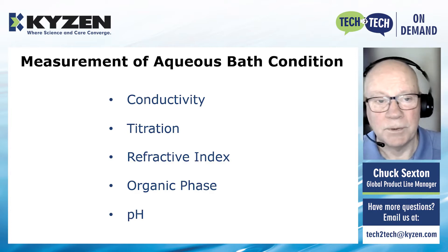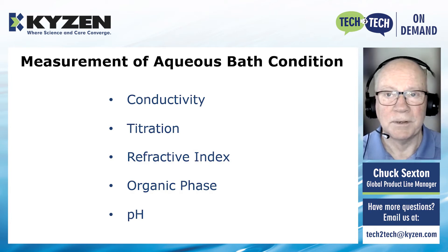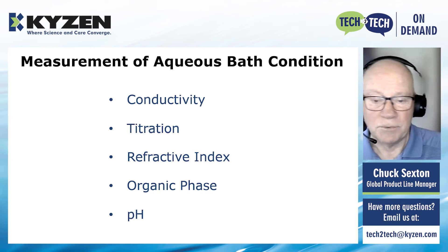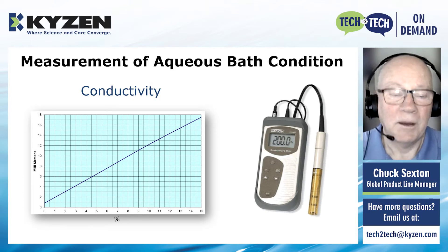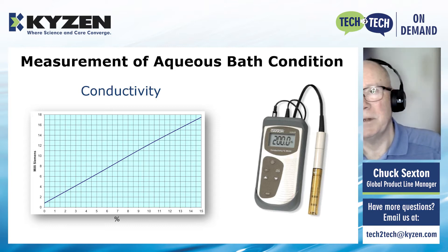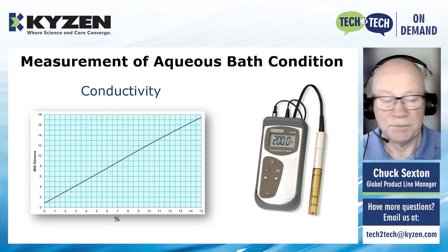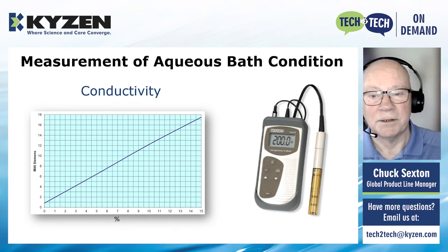For measurement of aqueous bath concentration — and I'll be talking about measuring both the concentration and the health or condition of these baths — for aqueous baths, we measure conductivity, titration, refractive index, organic phase, and I've also shown pH here. One of the key methods we use is conductivity, where we relate the ability of a bath to transmit electricity, measured in millisiemens, to the concentration of the cleaning product.